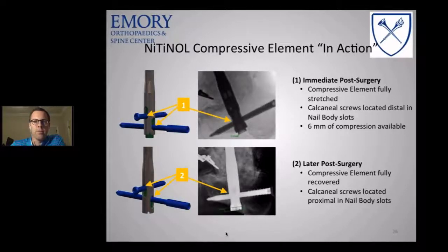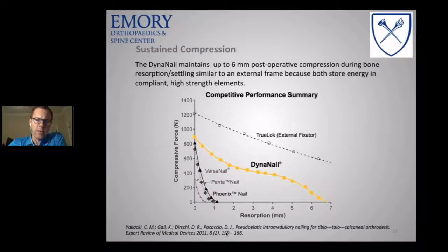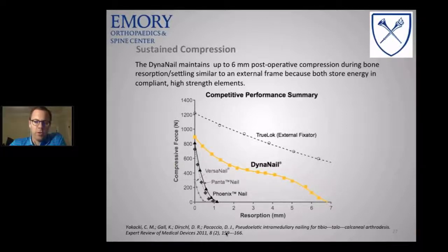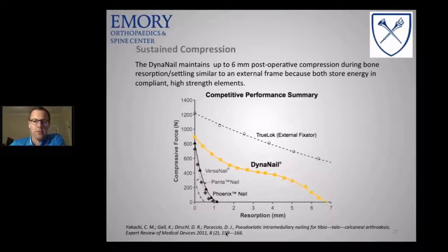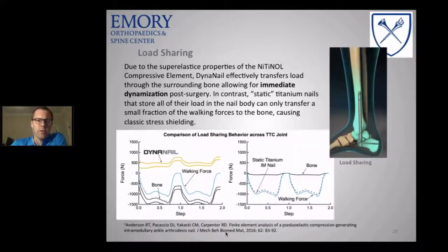As the patient heals, it continues to compress over time. There's also a dynamic screw space proximally which allows continuous compression after the nitinol element has fully compressed, though I've only seen that occur in very few of my patients. Six millimeters is probably adequate for most patients. The sustained compression provides up to six millimeters of post-operative compression during bone absorption or settling — similar to external frames. Beyond four and a half to five millimeters, you're still getting around 400 newtons of compression, where other nails drop to zero at about one millimeter.